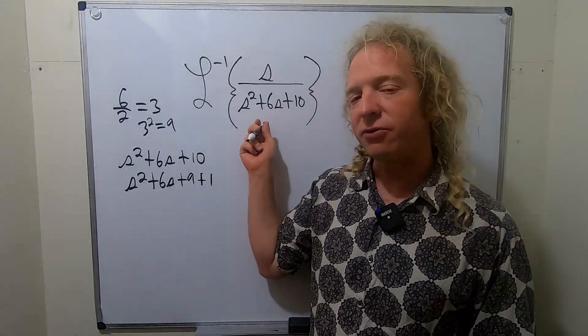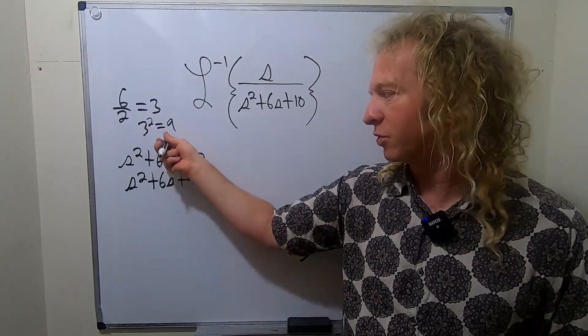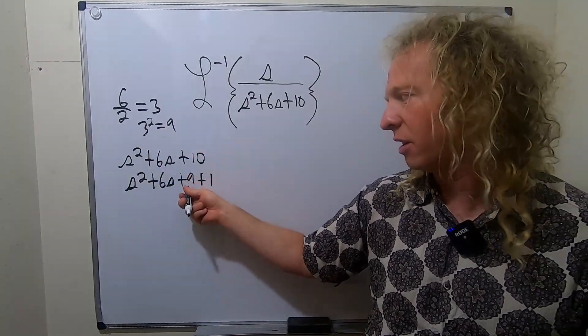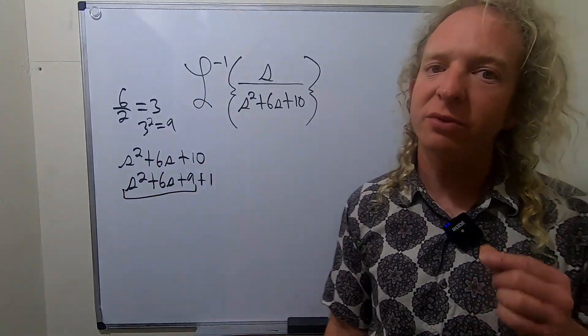So again, try to factor first. If you can't, resort to completing the square. So you write the bottom piece down, divide it by 2 squared, and then you put the 9 there. 9 plus 1 is 10. This piece here is called a perfect square trinomial.